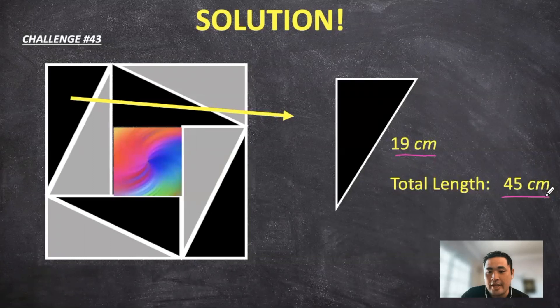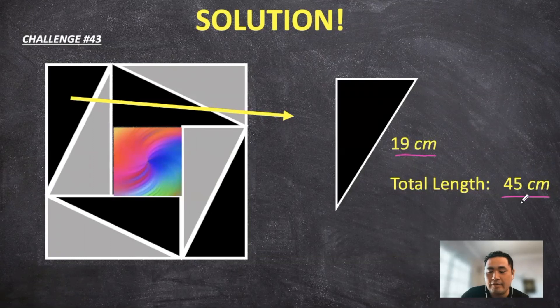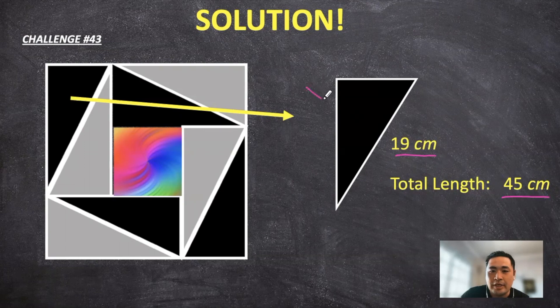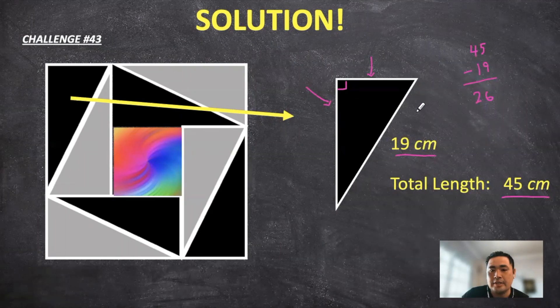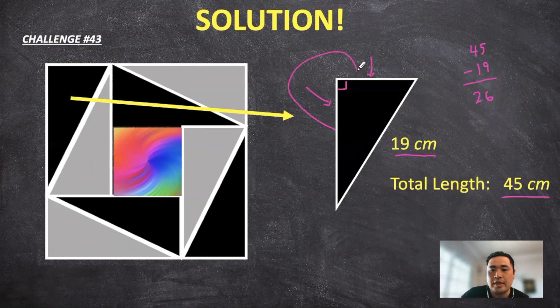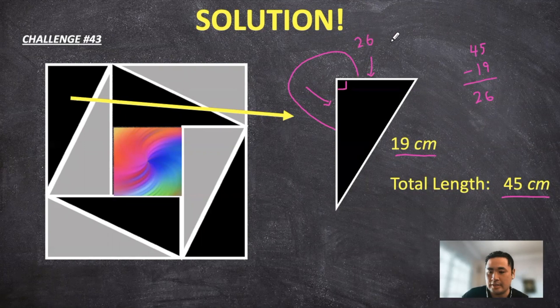If that's the case, we can subtract the 19 from the 45, and that would tell us the total length of these two sides right here. I'm just going to draw a 90 degree angle right here. So if we take the 45 and subtract the 19 from it, that is going to be equal to 26. So these two sides added together is going to equal a total of 26 centimeters.